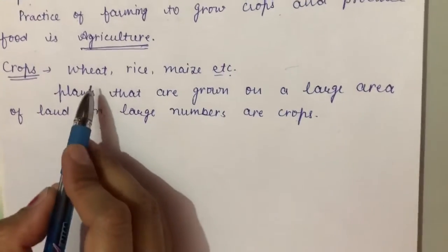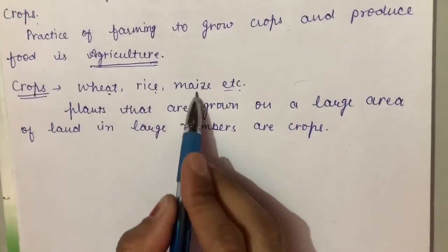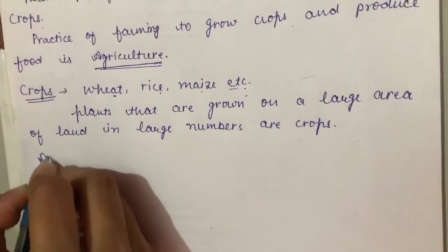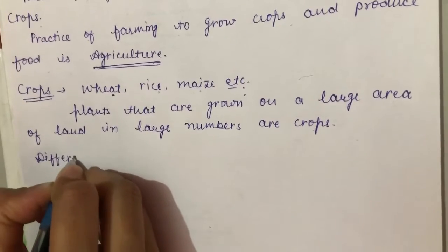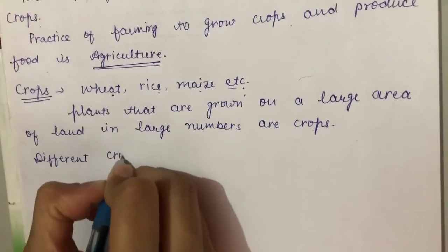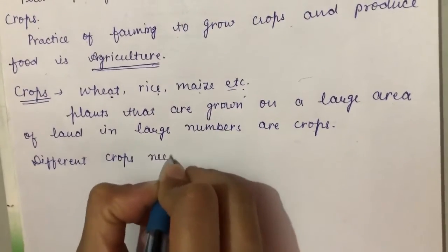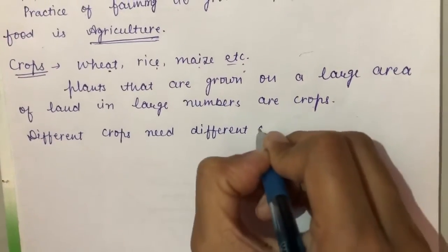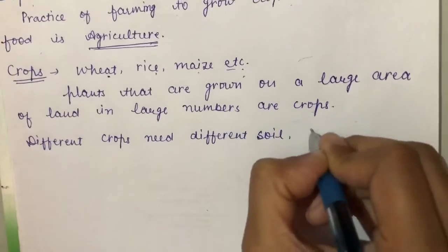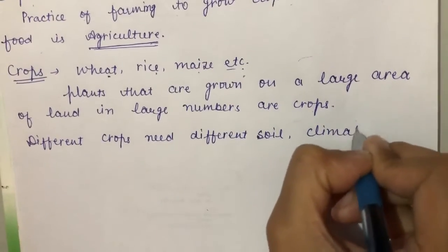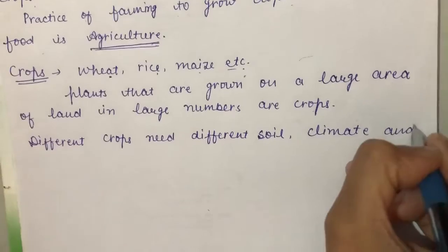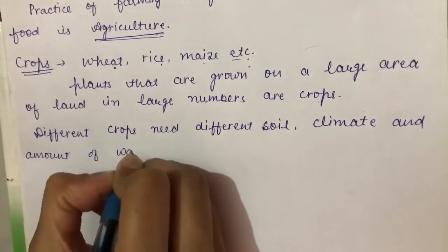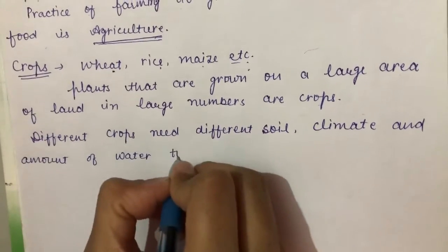Examples: wheat, rice, maize, etc. Now you all know that different crops need different soil, climate, and amount of water to grow.